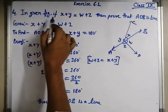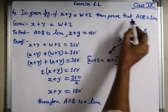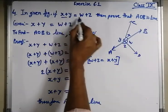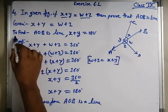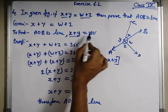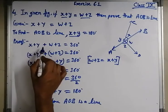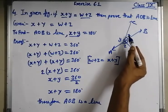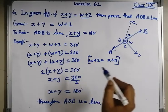Question number 4. In the given figure, if x plus y is equal to w plus z, then prove that AOB is a line. It is already given to us that x plus y is equal to w plus z. To find: we can show x plus y is equal to 180 degrees. Proof: x plus y plus w plus z is equal to 360 degrees — sum of all angles around a point.